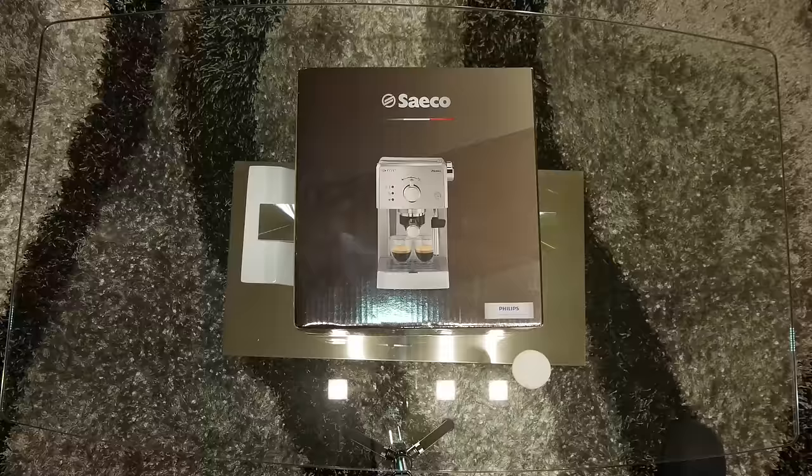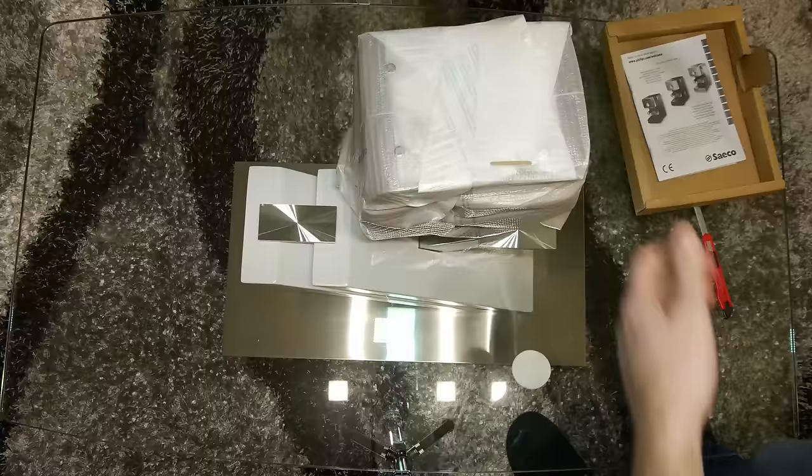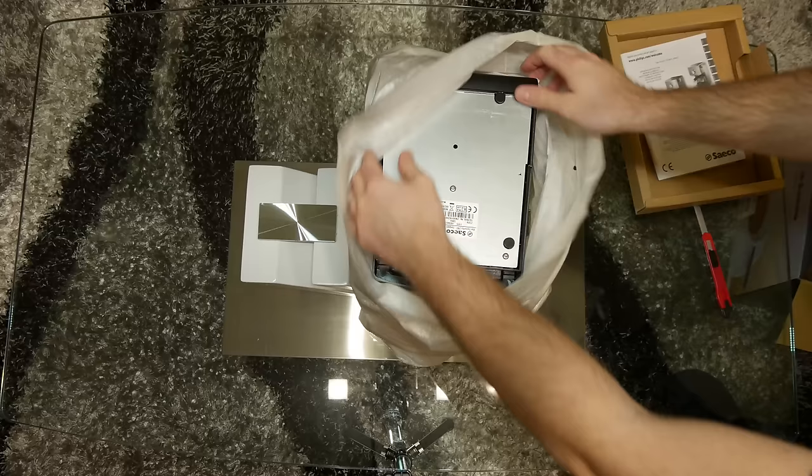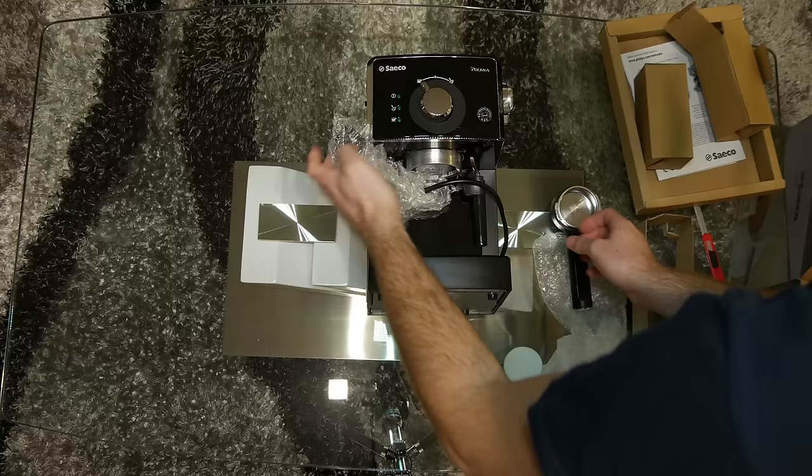You will find the instructions and warranty manual. The coffee maker is well protected. Inside the box you will find the portafilter handle and two filter coffee holders for ground and filter ESE pods, and one coffee tamper doser.